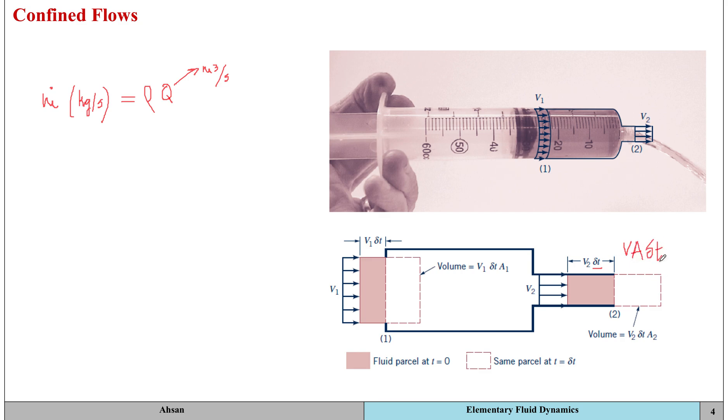That means that the volume per unit time is going to equal, delta t goes to the other side, so volume per unit time, which is the volume flow rate represented by q, is going to be equal to velocity into area.